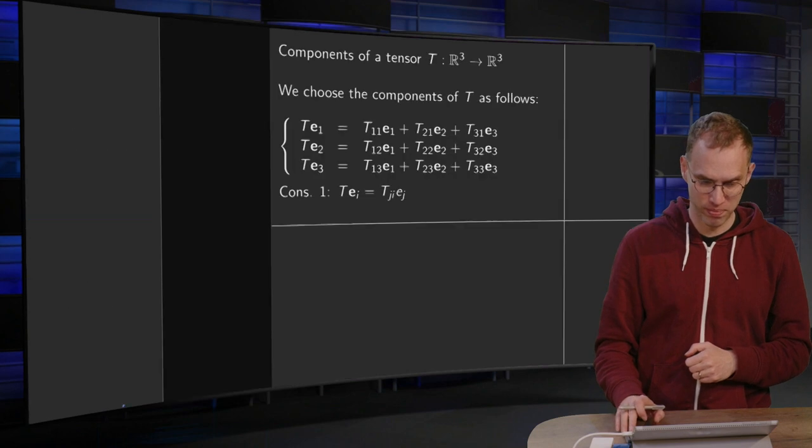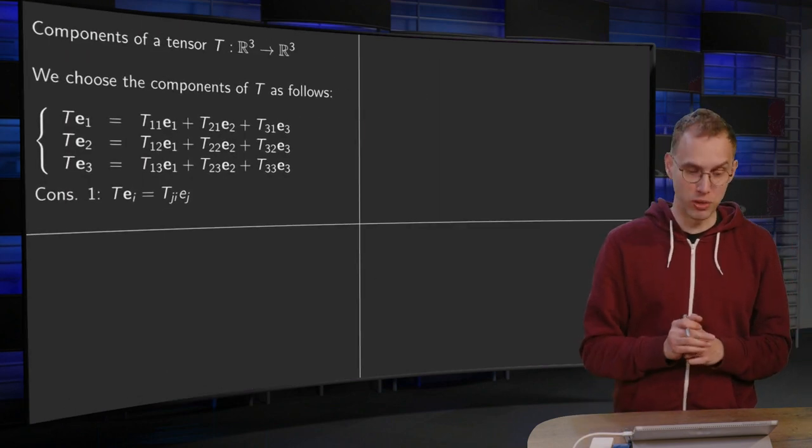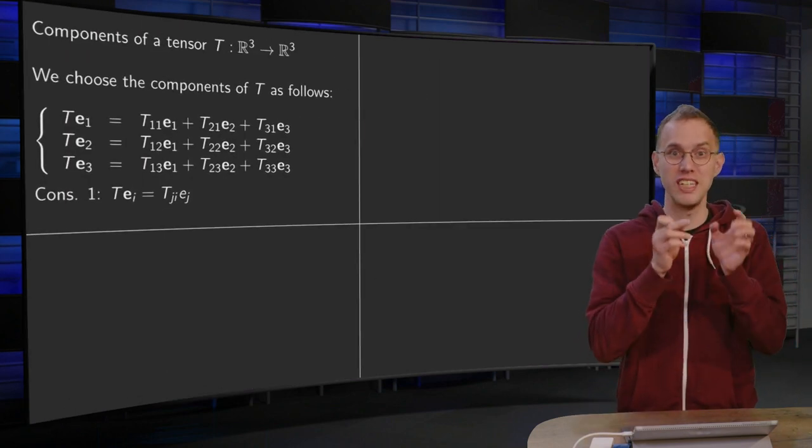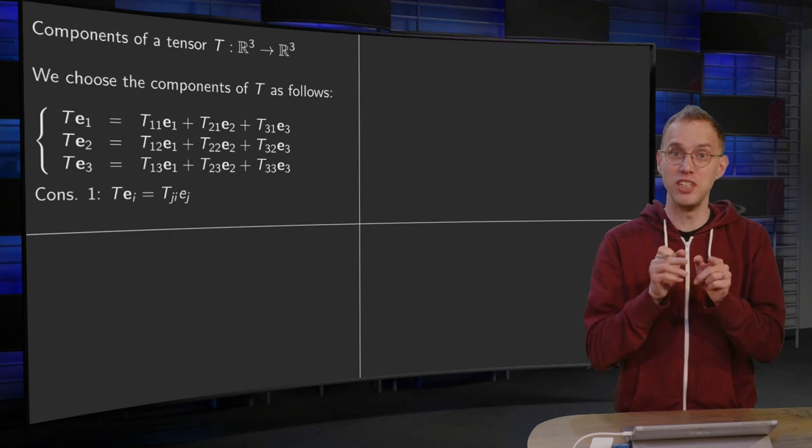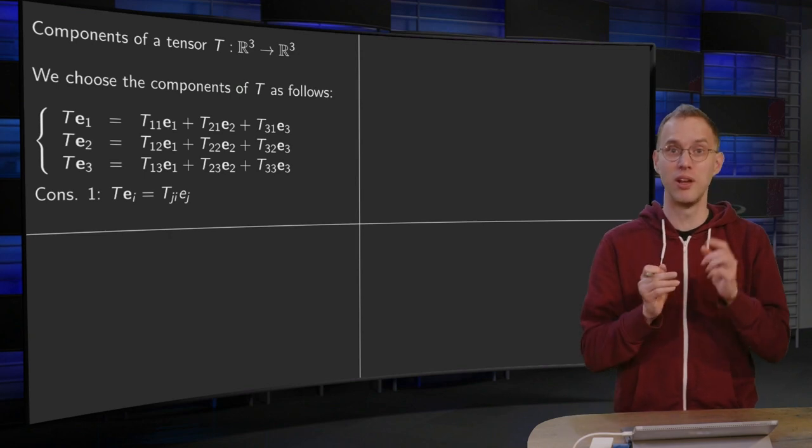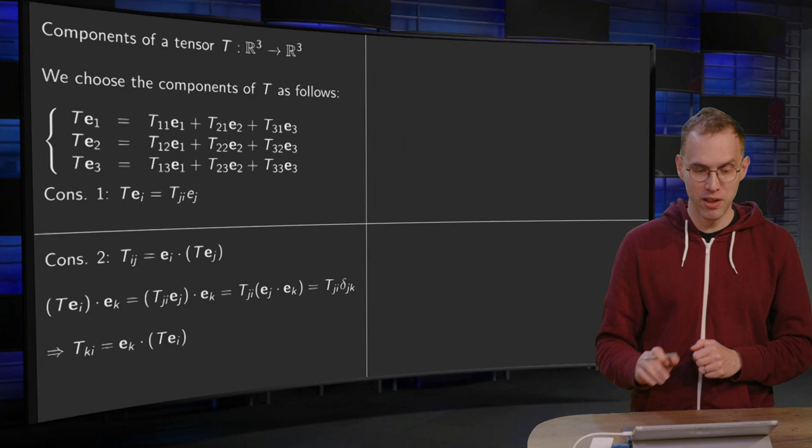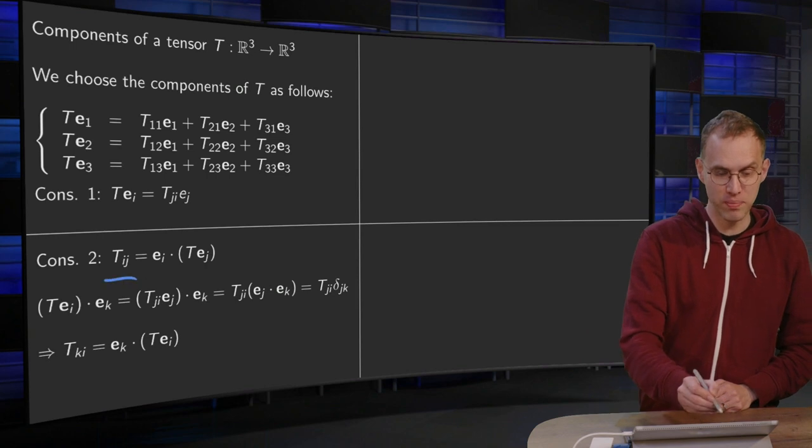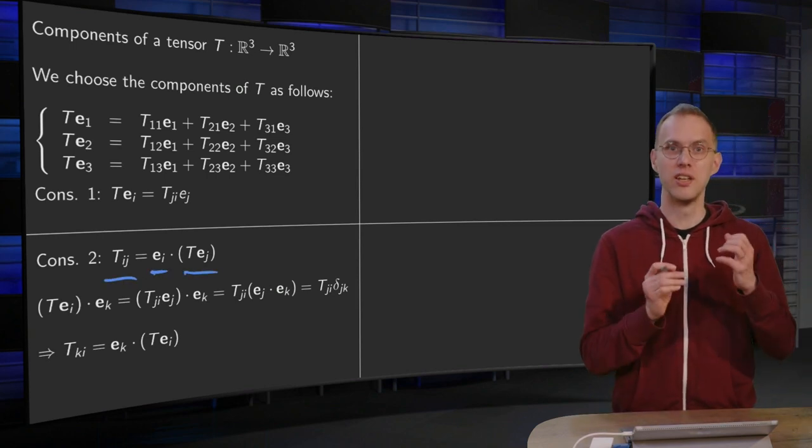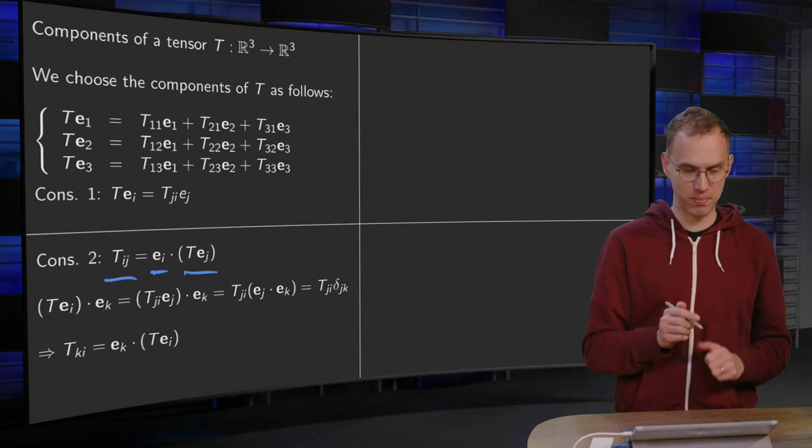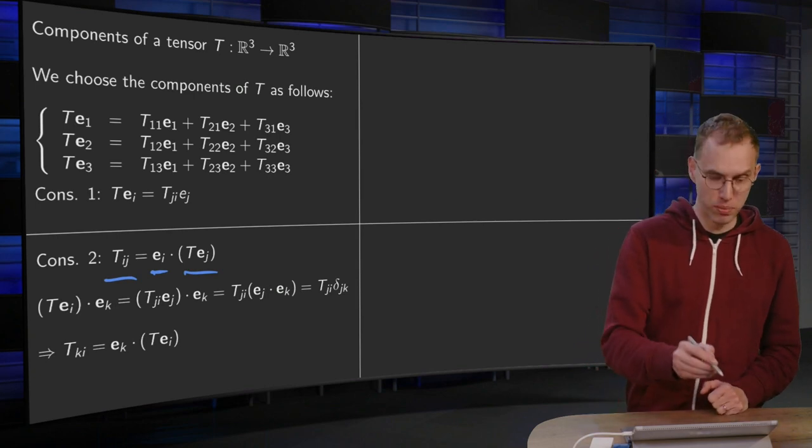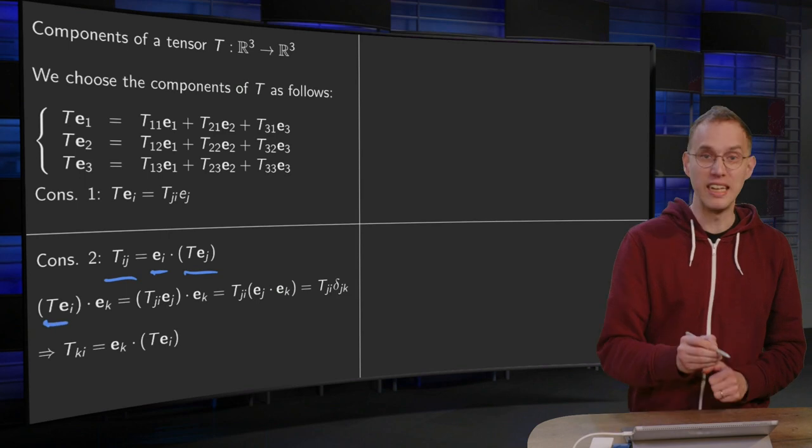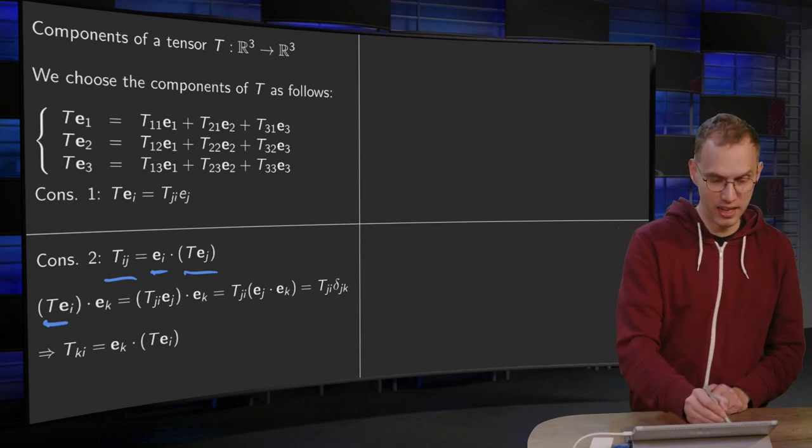Let's see why this is. So from this consequence, first consequence T of EI equals TJI EJ, learn this one by heart, we'll have a second consequence, learn this one by heart as well, that TIJ equals inner product EI inner product T of EJ. So why is that?